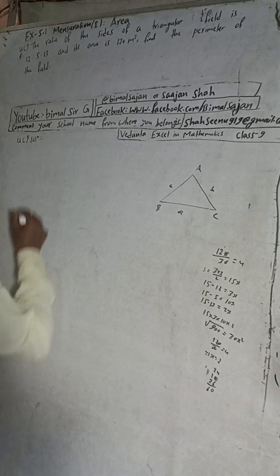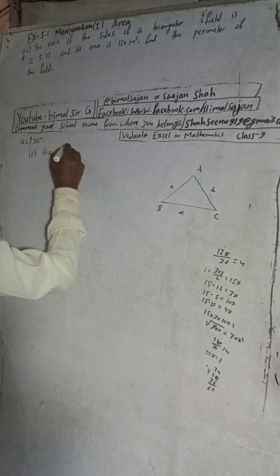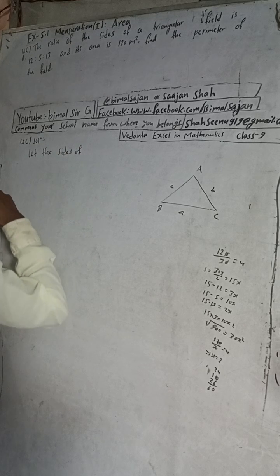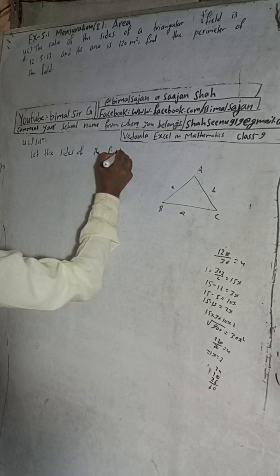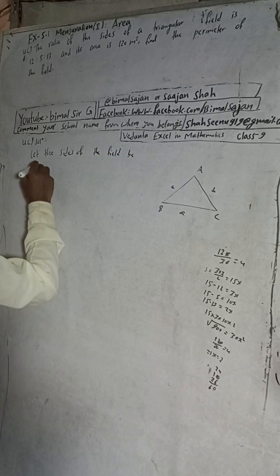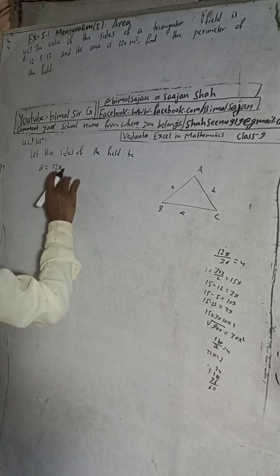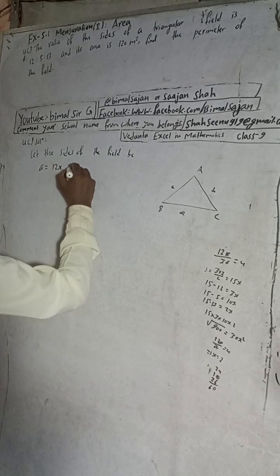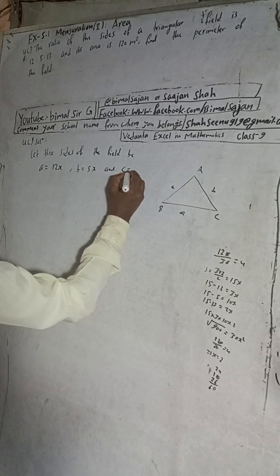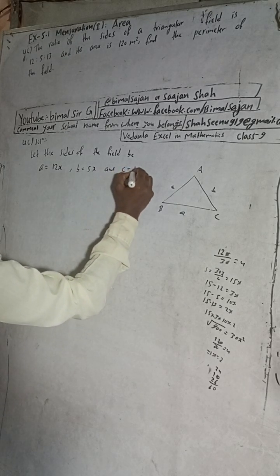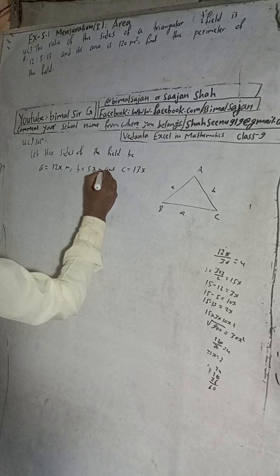The ratio is given, so we can write: let the sides of the field be a = 12x, b = 5x, and c = 13x — all in meters.